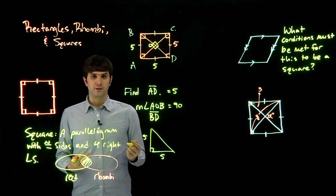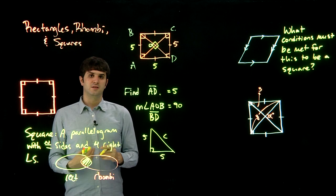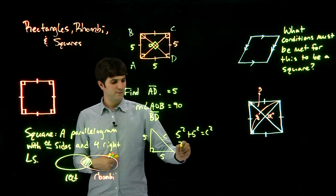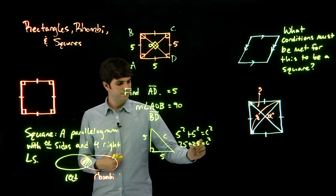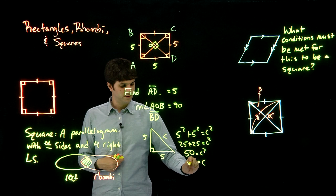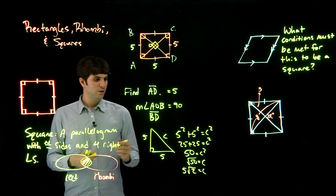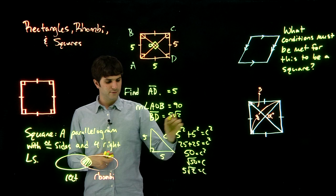So we can do Pythagorean Theorem. So this is going to be C, remember the Pythagorean Theorem says the sum of the legs squared equals the hypotenuse squared, so this is 25 plus 25 equals C squared, 50 equals C squared, so C equals root 50, which we can reduce to 5 root 2. So BD is going to equal 5 root 2.